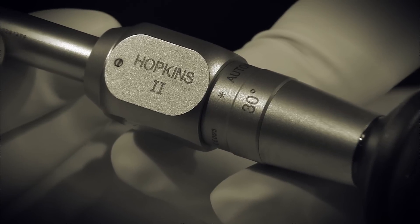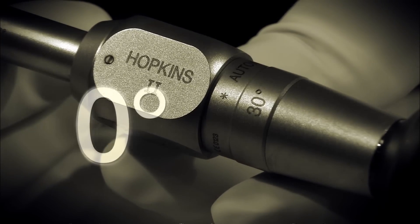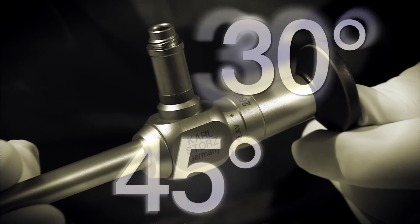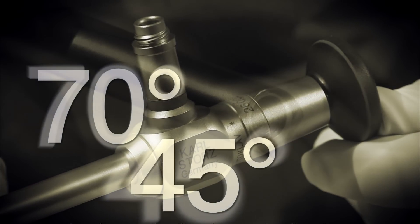In the past, the viewing direction was predetermined as 0, 30, 45, 70, or 120 degrees by the selection of the telescope.